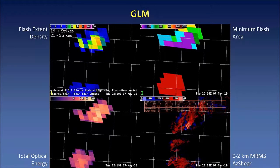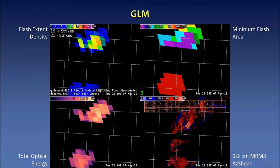Continuing on past this, here's 22-19. The supercell continued to move on into the Texas Panhandle and produced the tornado southeast of Amarillo. You can see in the top right that the minimum flash area remains small and we still have high flash extent density. But the cell just to the south of that — that red in the minimum flash area — indicates a flash around 1,200 to 1,500 square kilometers in size. So you can see that the northern supercell maintained its strength with small flash areas, versus the southern cell where the flash areas are a little bigger and indicative of maybe a storm that's not as strong.